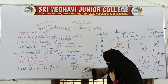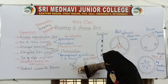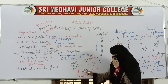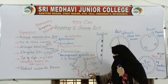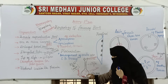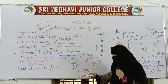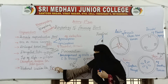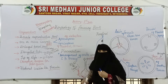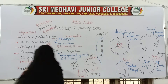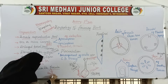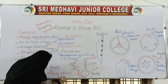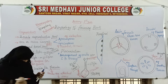The ovules are attached to the ovary through a flattened cushion-like structure called the placenta. With the help of this placenta, ovules are attached to the ovary.